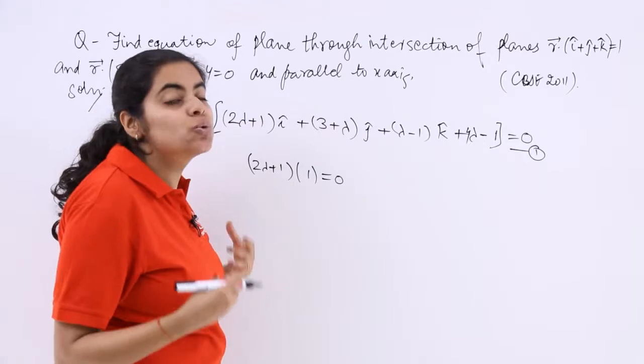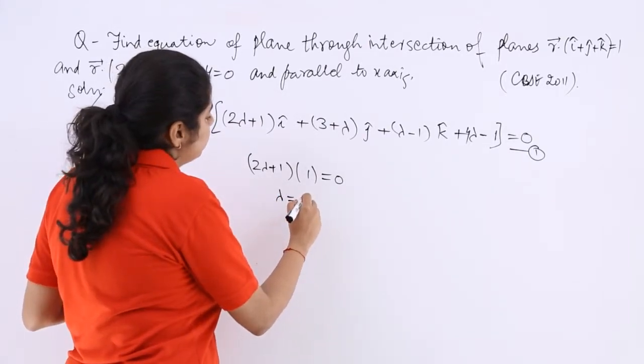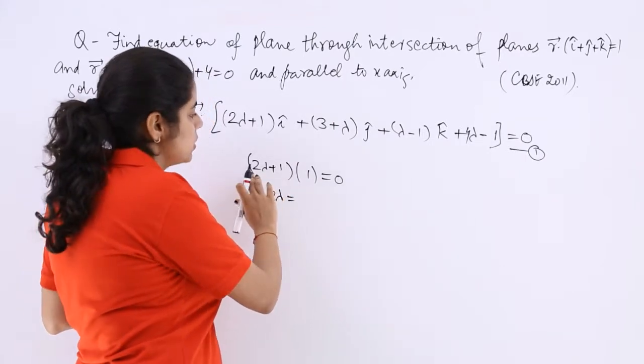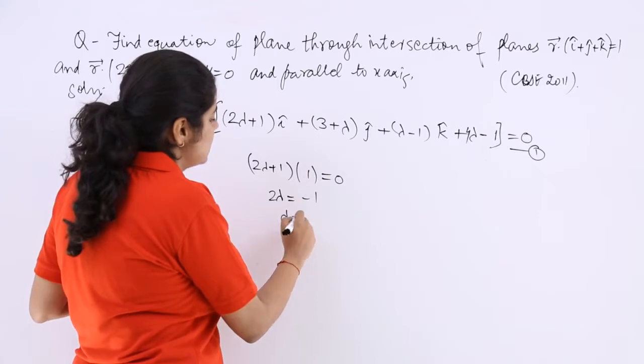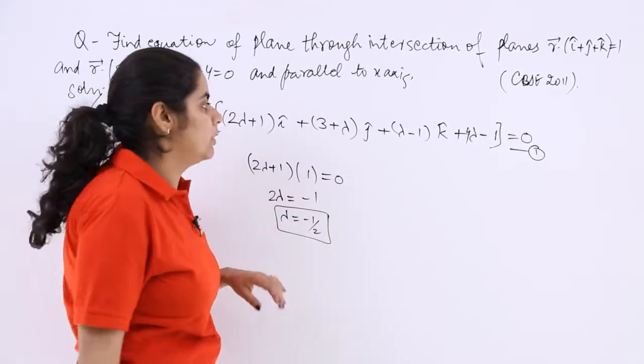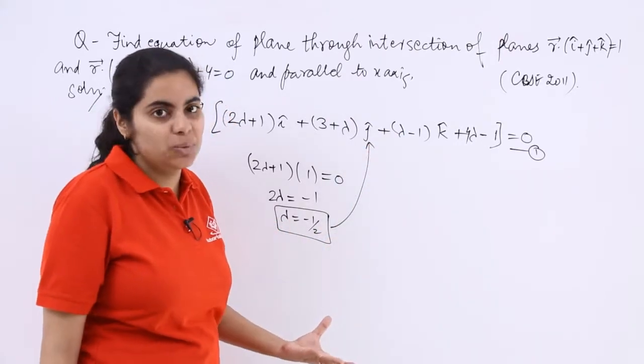I'm again skipping one step to make you practice. This becomes 2 lambda plus 1 equals 0, so lambda equals minus 1 by 2. Now this minus 1 by 2 value of lambda will give me the complete answer which I needed.